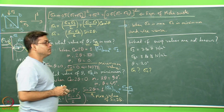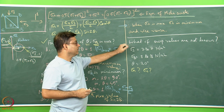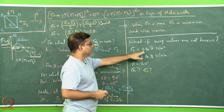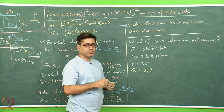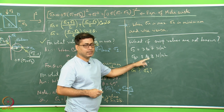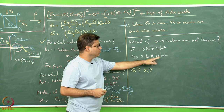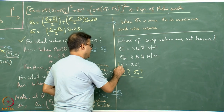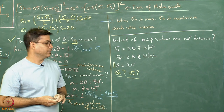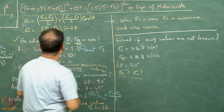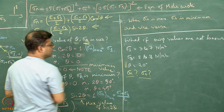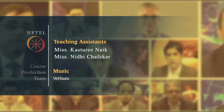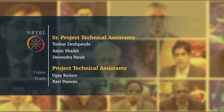Finally, what if the crisp values are not known for some parameters? For example, sigma 1 varies from 3 to 7 N/m², sigma 3 varies from 8 to 11 N/m² (both positive, hence compressive), and theta has a crisp value of 20 degrees. In this case, you have to apply the sigma N and sigma S equations carefully to obtain the range of possible values for sigma N and sigma S.